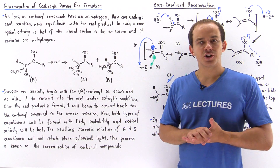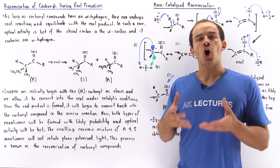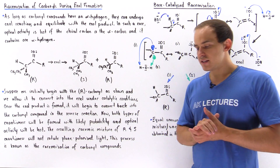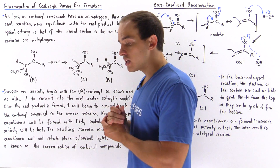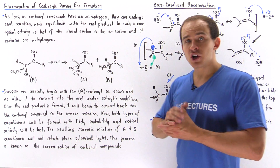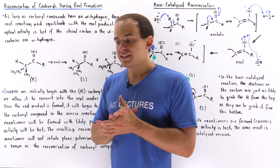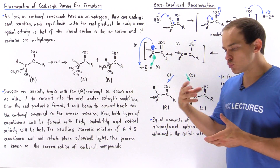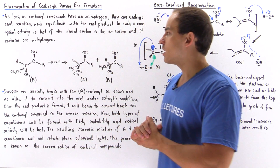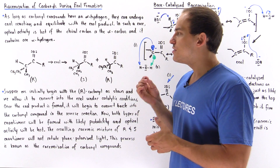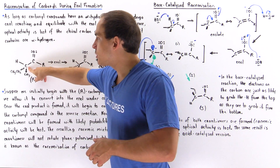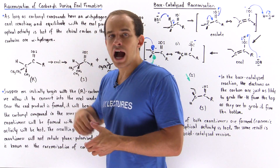Suppose we have a container with a carbonyl compound that is optically active. This means one of the carbons inside that carbonyl compound is chiral. Specifically, the alpha carbon is chiral and contains one H atom, which means the carbonyl compound is able to rotate plane polarized light. This is one example of such a carbonyl compound, where the alpha carbon contains one H atom and is also the chiral carbon.